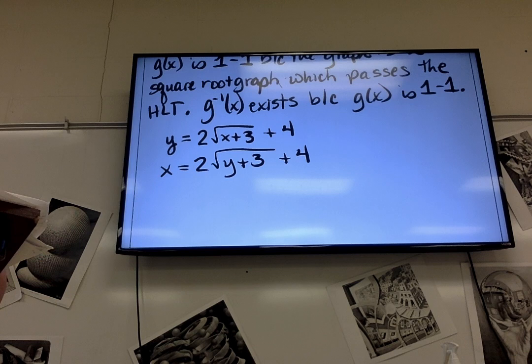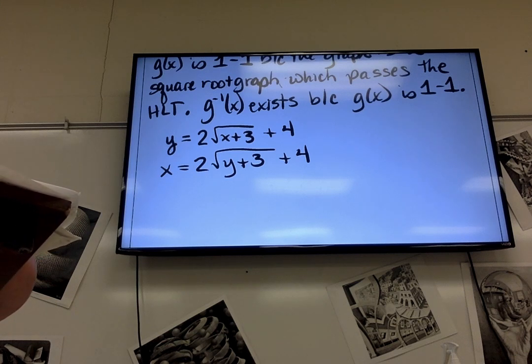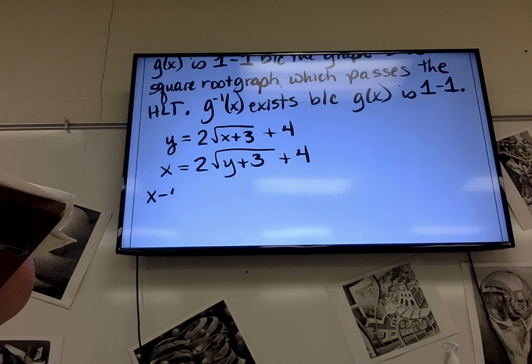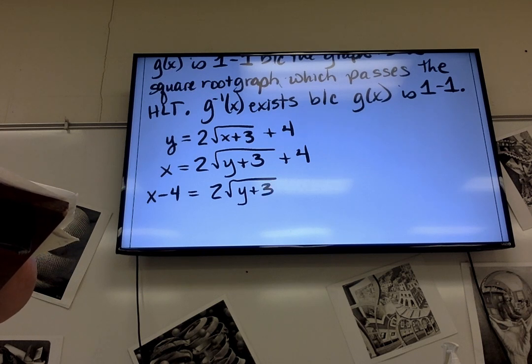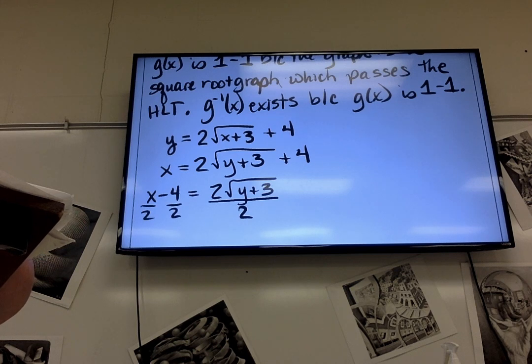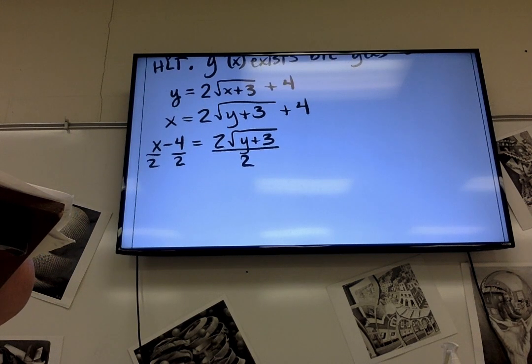What do we do first? Yeah, I've got to subtract the 4. The goal is to get y by itself, so I've got to isolate the square root. So when I subtract 4, it looks like this. I've still got to get that square root by itself, so what do I need to do? Divide by 2. Now I'm going to write this part down. When I divide by 2, I have to divide everything by 2. So that's 1/2 x minus 2.